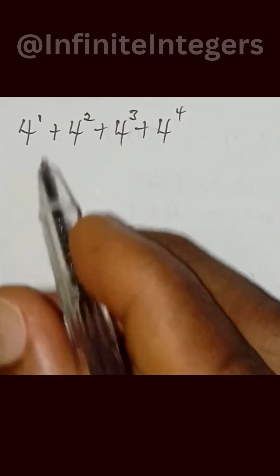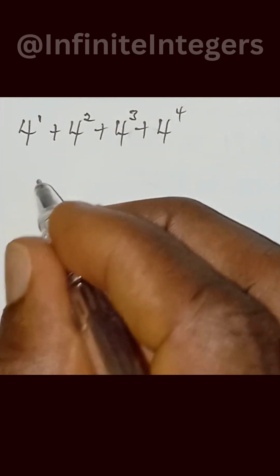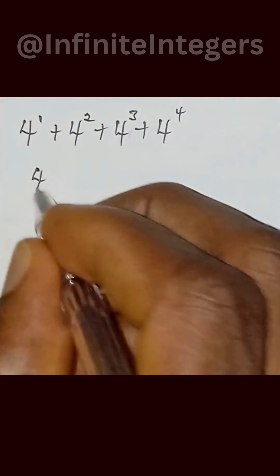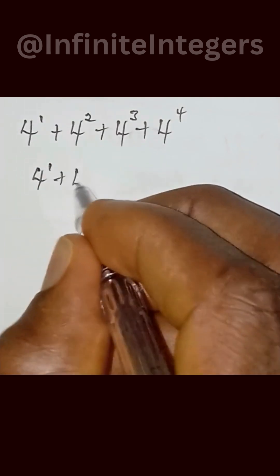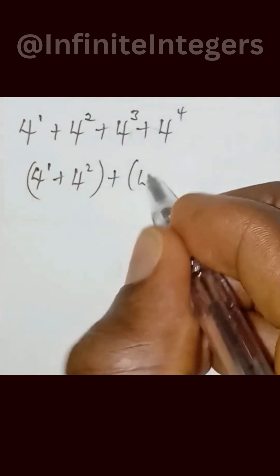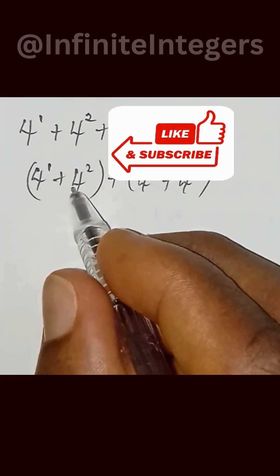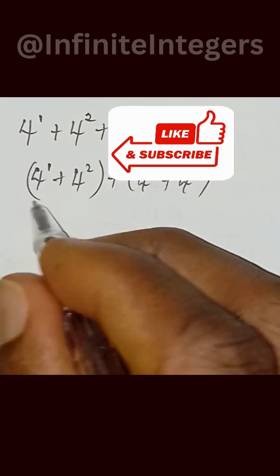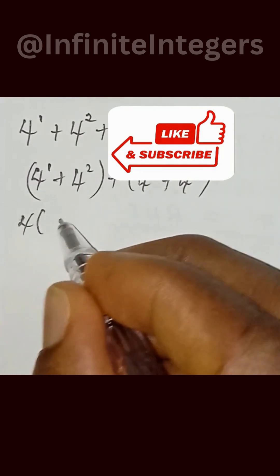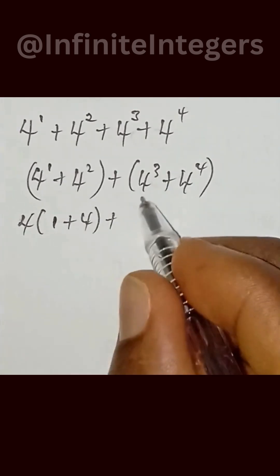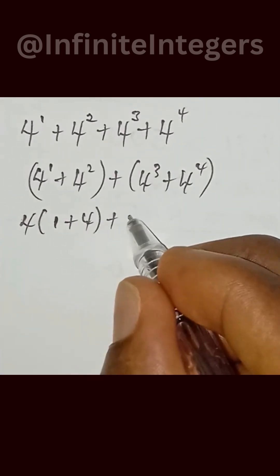To evaluate this one, let's put the parentheses. We have 4 to the power of 1 plus 4 to the power of 2 in brackets, plus 4 to the power of 3 plus 4 to the power of 4 in brackets. We can factor out 4, giving us 4 times 1 plus 4.